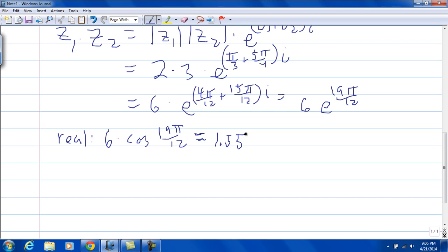And then for the imaginary part, it's going to be 6 times sine of 19 pi over 12, which is approximately, I have negative 5.79, so rounded to 2 places, negative 5.80.